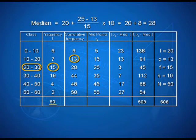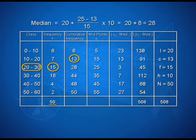The midpoints of the classes are taken as (0 plus 10) upon 2, that is 5; (10 plus 20) upon 2, that is 15; and so on. By taking the difference of x_i minus median, we get the following entries. Then we calculate the product of frequencies and the difference of x_i minus median, and we find out the total of these, that is 508 in this case.